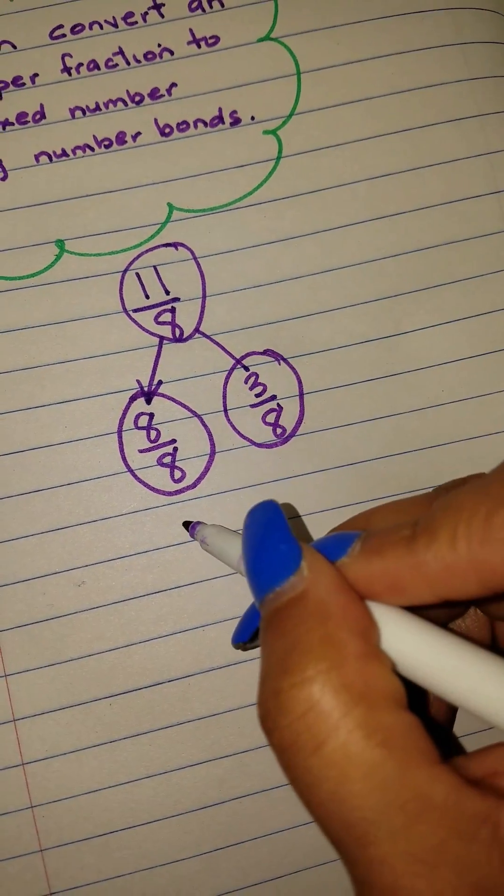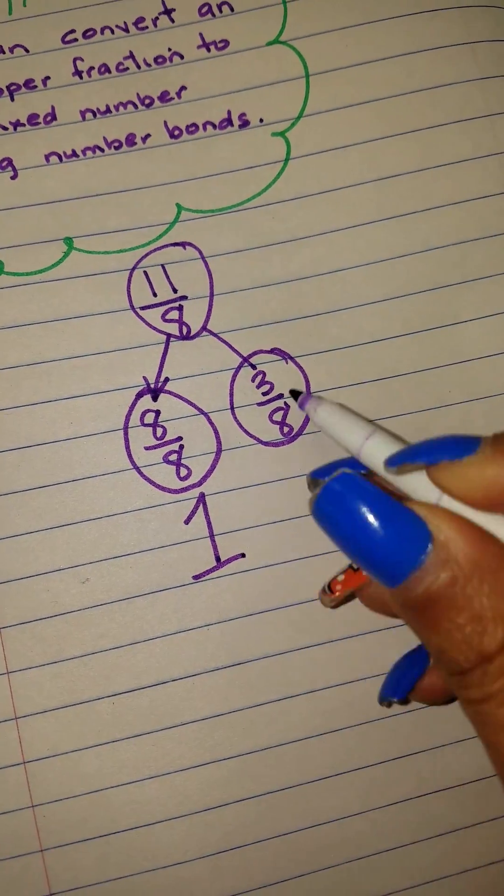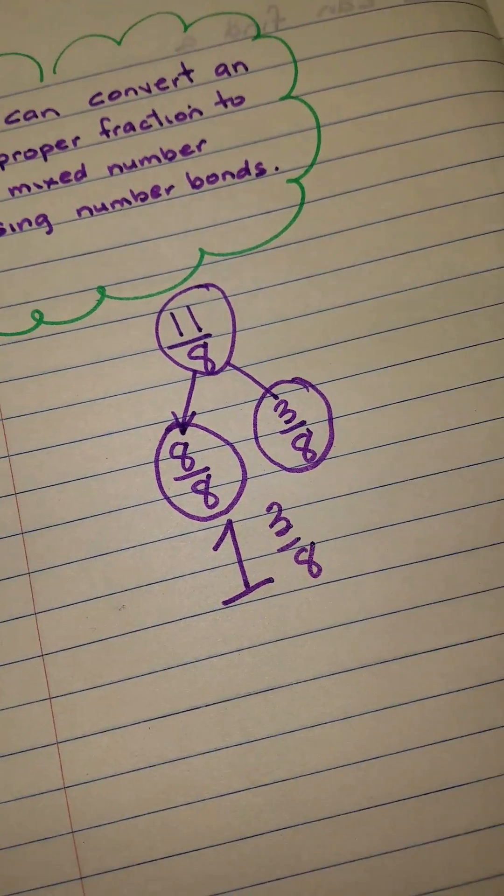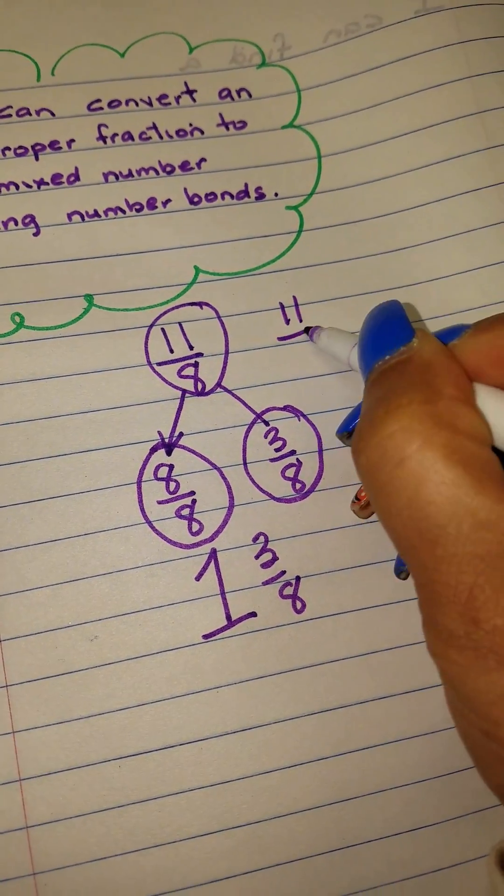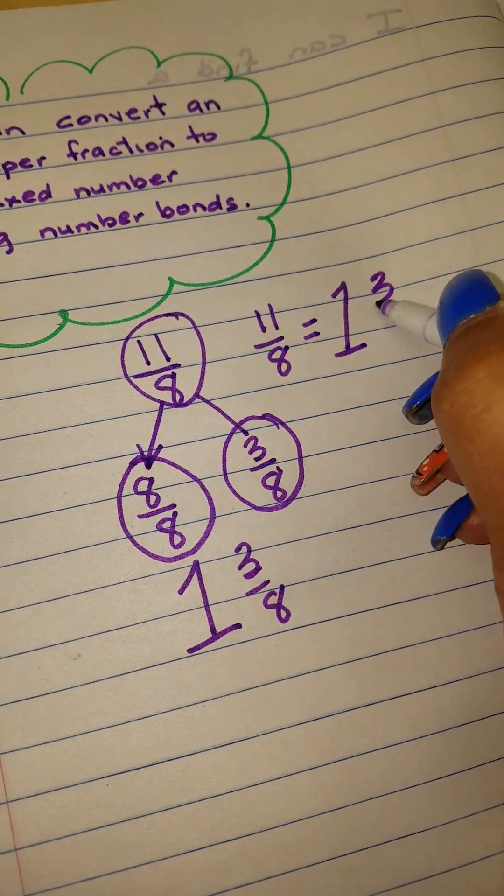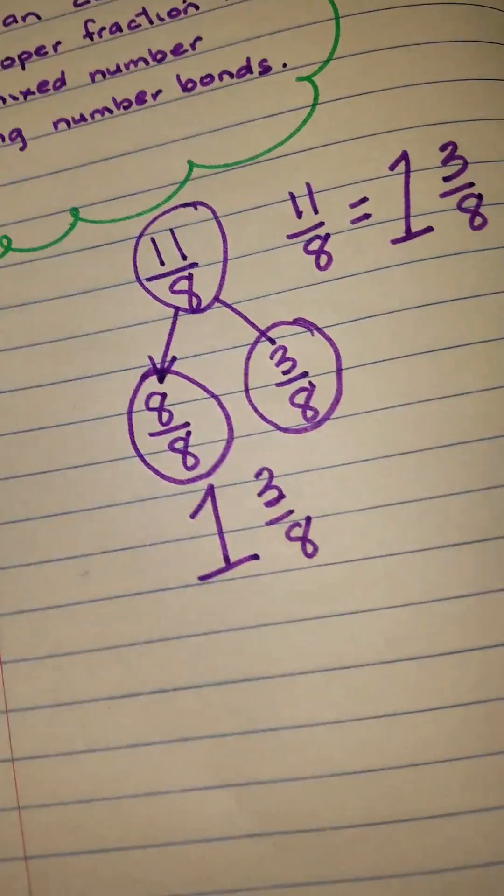8 eighths is also represented as 1 whole, and 3 eighths would be our fraction. So 11 eighths is equal to 1 whole and 3 eighths.